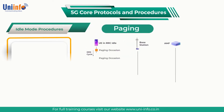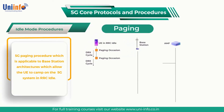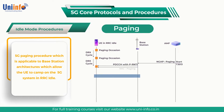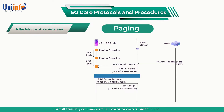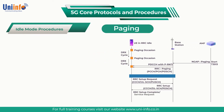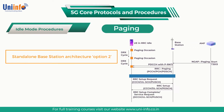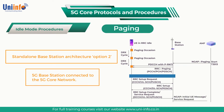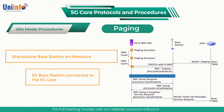This section describes the 5G paging procedure, which is applicable to base station architectures that allow the UE to camp on the 5G system in RRC idle. For example, this section is applicable to the standalone base station architecture option 2, which is based upon a 5G base station connected to the 5G core network.